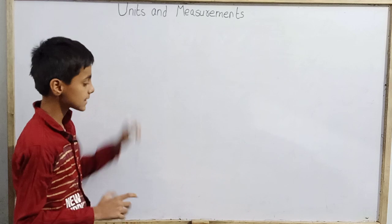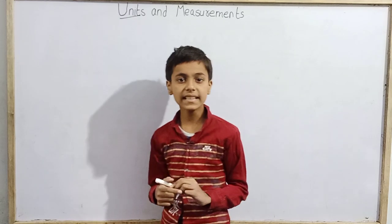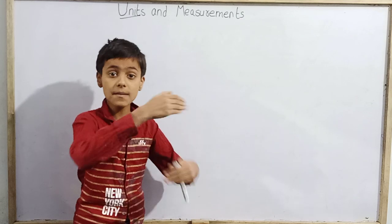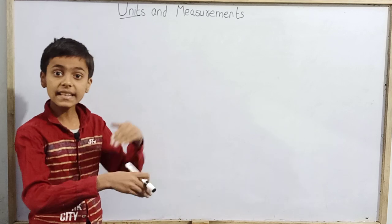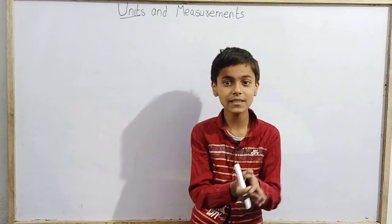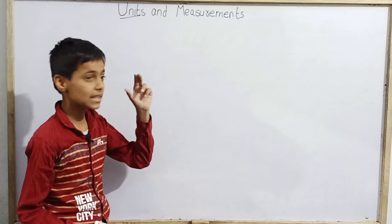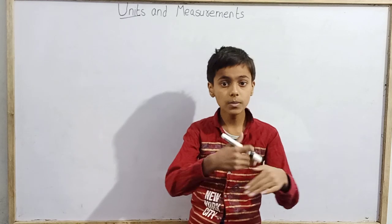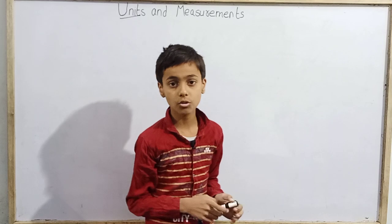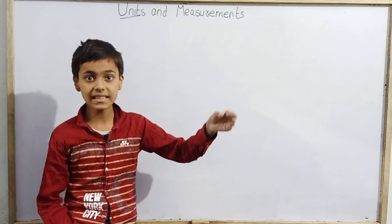Let's start from the main thing: what actually is a unit? Suppose we have a goat and an elephant. We can say the elephant is heavier than the goat, but if someone asks how many times heavier, we need a reference. If we suppose a unit mass, the elephant might be 200 units and the goat 20 units — so the elephant is 10 times heavier.